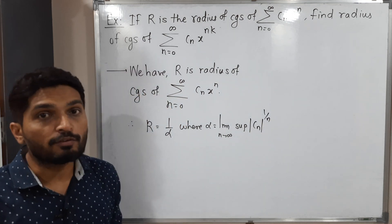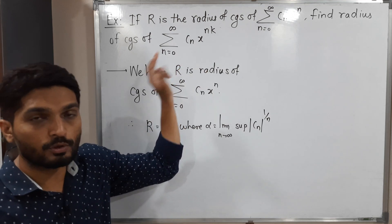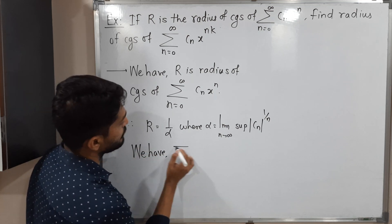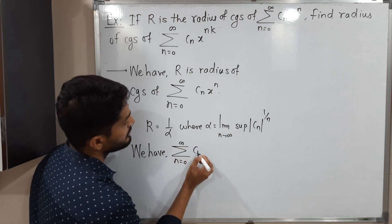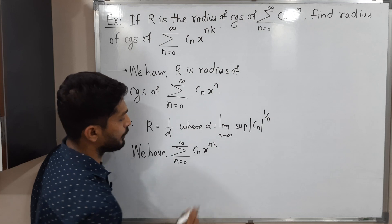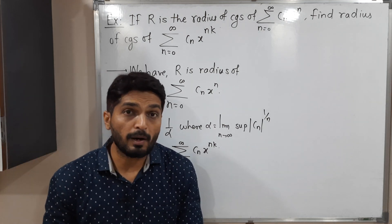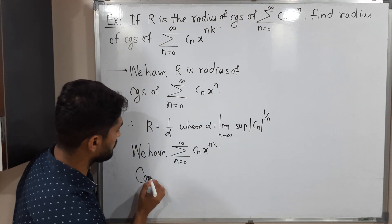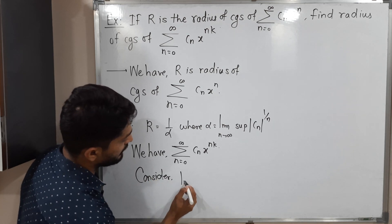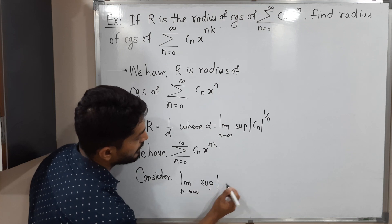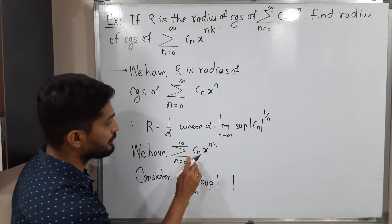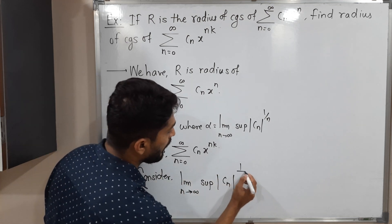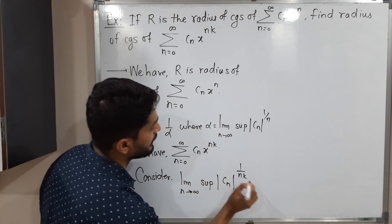With this information, we have to find the radius of convergence of the power series summation n running from 0 to infinity, cₙ x raised to nk. To find the radius of convergence, we need to calculate the value of the limit supremum. Consider limit n tends to infinity, supremum of mod cₙ raised to 1 by nk, where cₙ is the coefficient of x raised to nk.